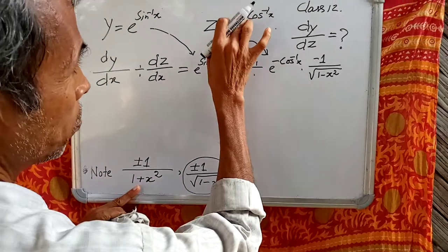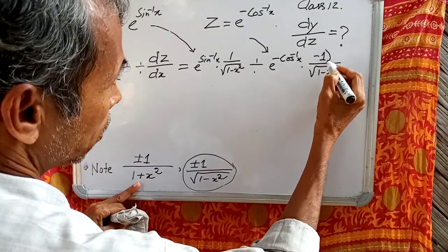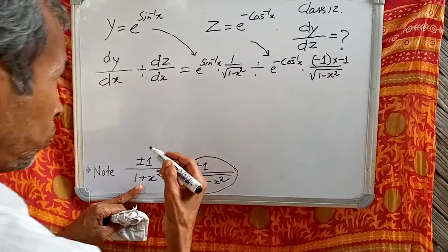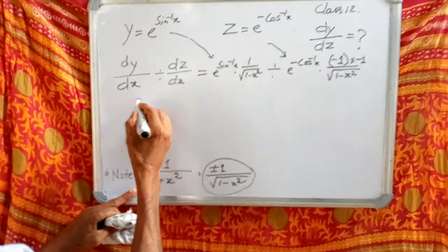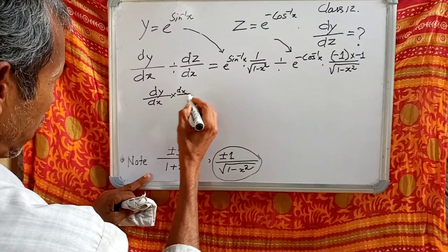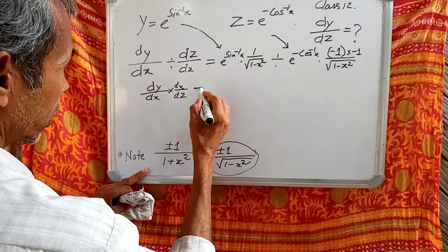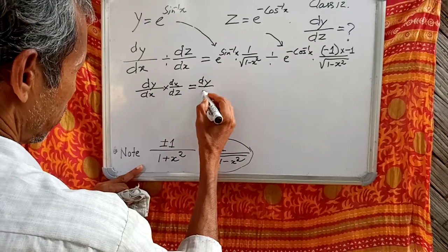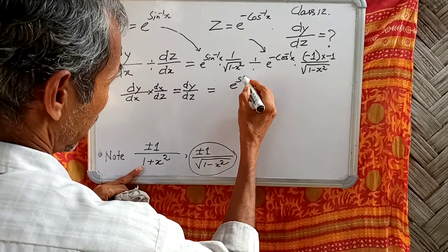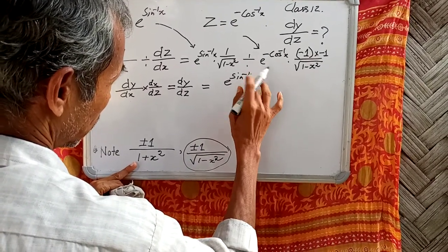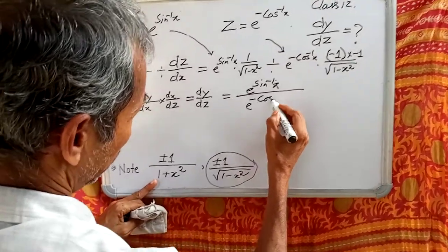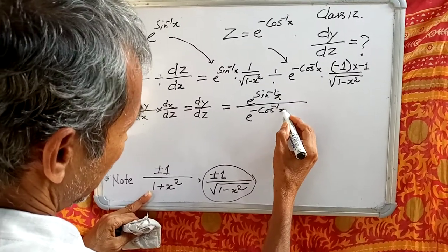Here the sign is minus, but the derivative of cos inverse x already carries a minus, so there is another minus 1 factor. Therefore, dy/dx divided by dz/dx gives us e to the power sin inverse x, divided by e to the power minus cos inverse x.